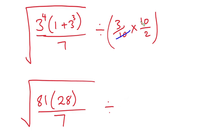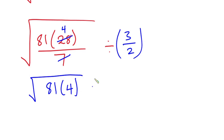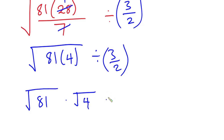Straight away you can see that this 10 will cancel this 10, so now we have 3 over 2. From this side you can see that 7 goes into 28 four times, so now we have the square root of 81 times 4, and this is divided by 3 over 2. I can write this as square root of 81 times square root of 4, divided by 3 over 2.